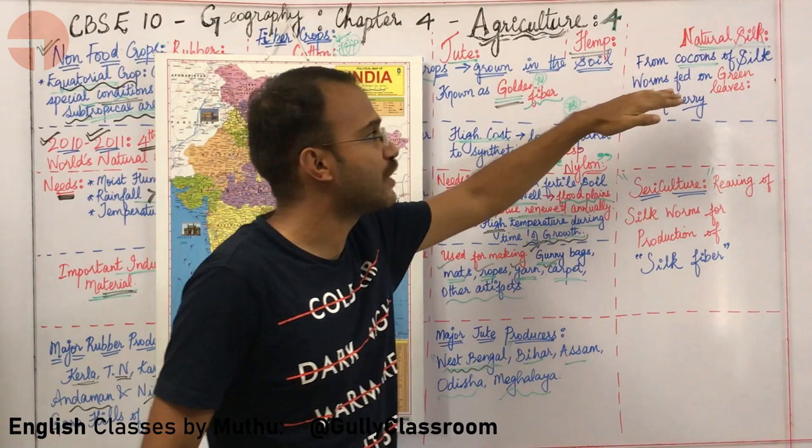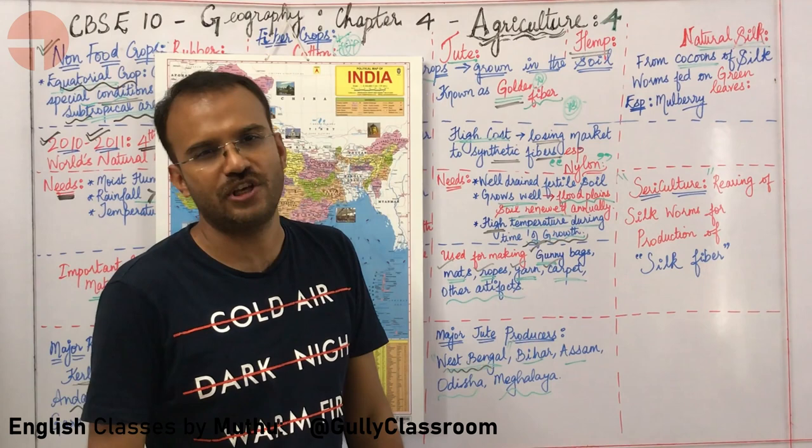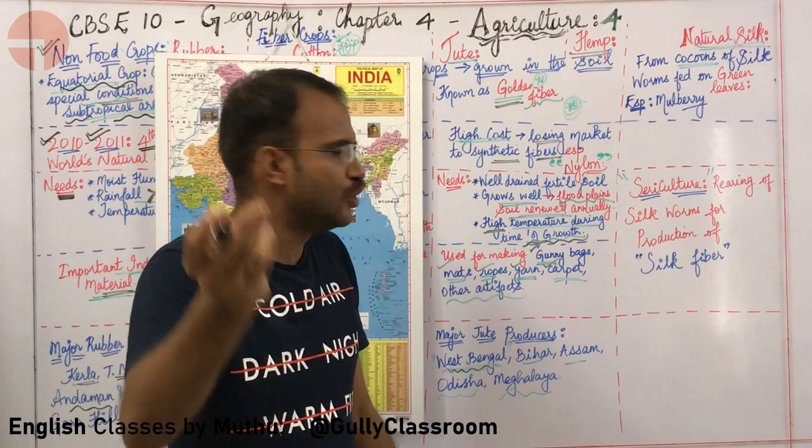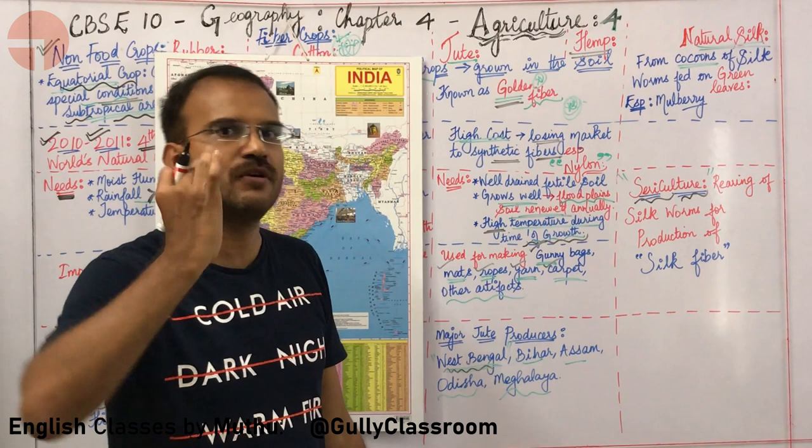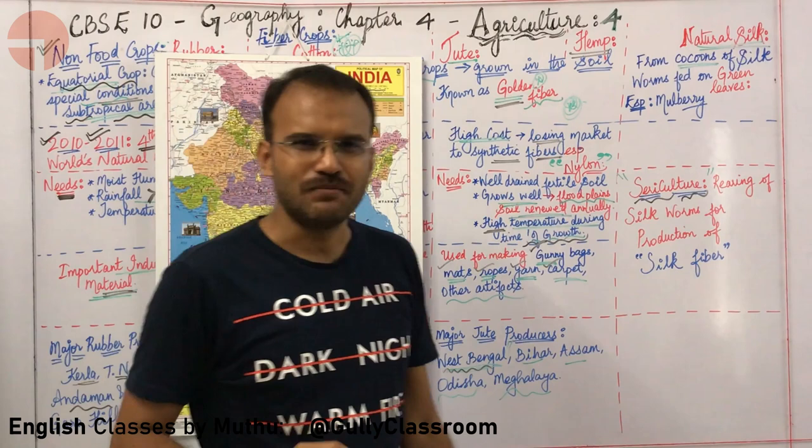What about natural silk? Natural silk is produced from the cocoons of the silkworm, which are fed green leaves — especially mulberry leaves. The cocoons are boiled and silk is extracted. Rearing of silkworms for the production of silk is called sericulture.